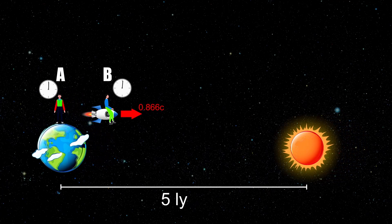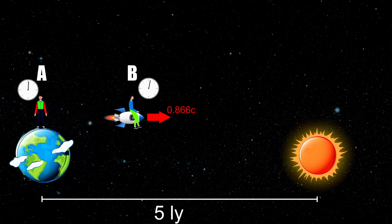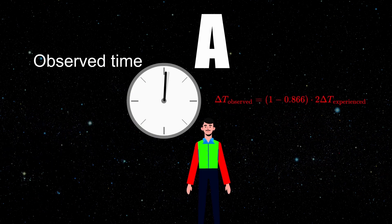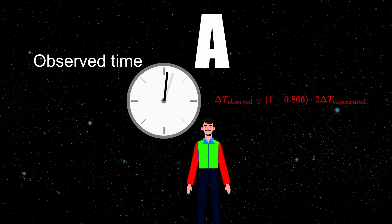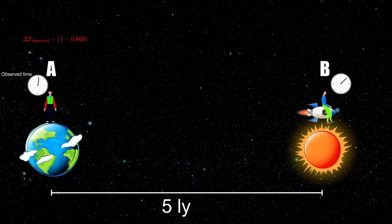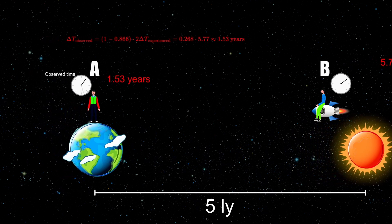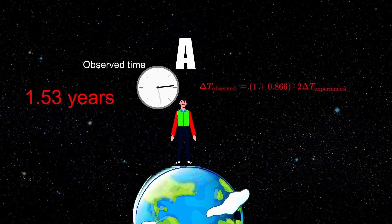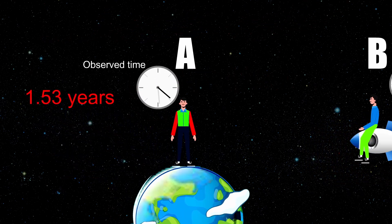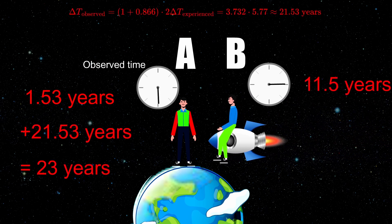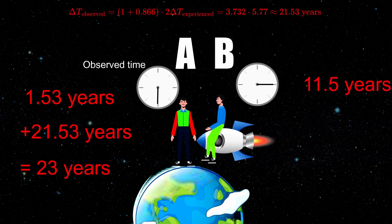The observer B would see A clock run slower than the time dilation predicts on the outgoing journey, due to the fact that the light has to travel longer and longer distance after each tick. But this would be perfectly compensated on the ingoing journey, and all there would be left is a pure time dilation contribution.